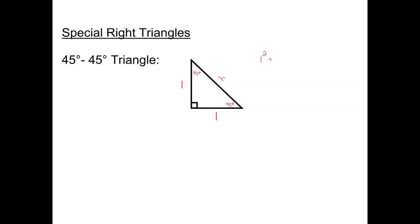Let's calculate what the hypotenuse H would be. If I take leg squared plus leg squared equals hypotenuse squared, I've got 1 plus 1 equals H squared. That means H squared is 2, and H equals the square root of 2. So I'm going to go back over to my triangle and say that H equals the square root of 2.